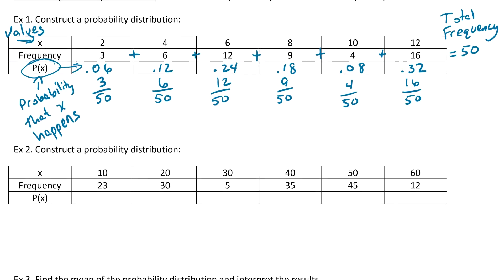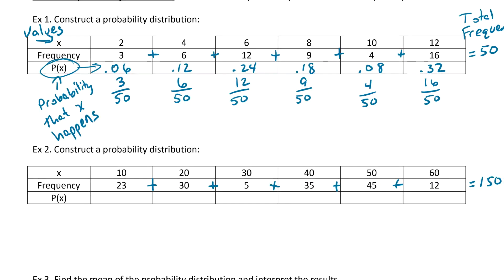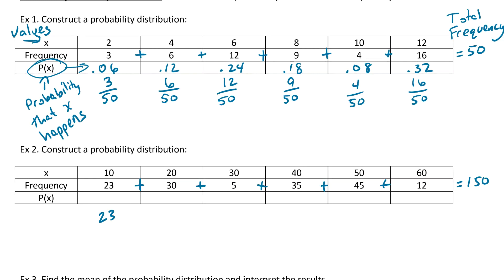Example 2. Again, we're just going to be constructing a probability distribution, so we need to find all of those probabilities for each of those blanks. Again, start off by adding up all of your frequencies. So 23 plus 30 plus 5 plus 35 plus 45 plus 12, add all of those up and you should get 150. For each of these down here, we're going to be taking the frequency, so 23, and putting it over the total frequency, which would be 150. For that one we're going to get 0.15, and again we're going to be just rounding all of these to two decimal places.